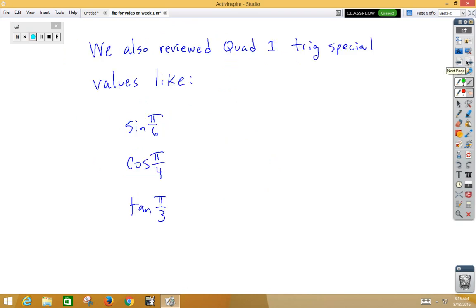We also reviewed this week quadrant 1 trig special values, which are the single most important thing we learned in trigonometry for calculus. So, we need to make sure that we are good with problems like this. Obviously, sine of π/6 is 1/2. Cosine of π/4 is √2/2. Tangent of π/3 is √3. We should know those just about as quickly as we might know 5 times 4 being 20.